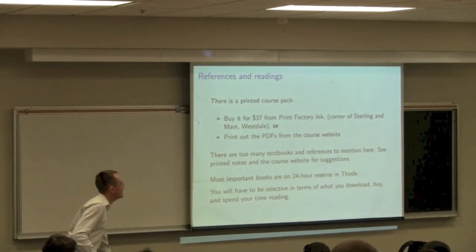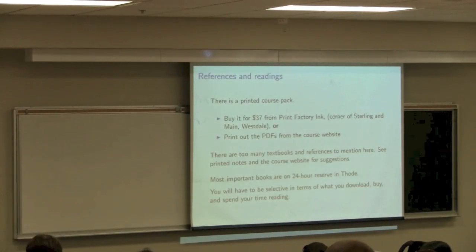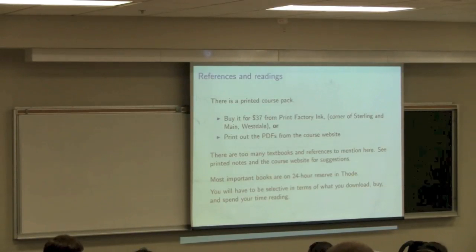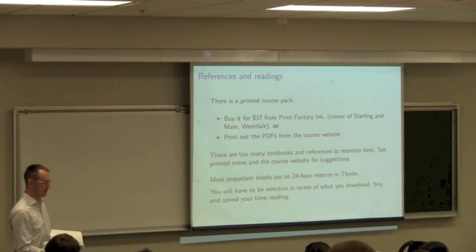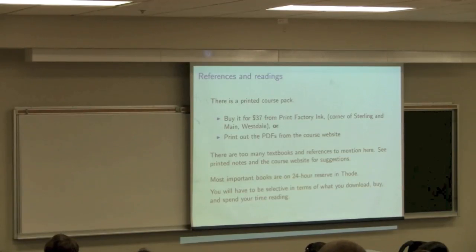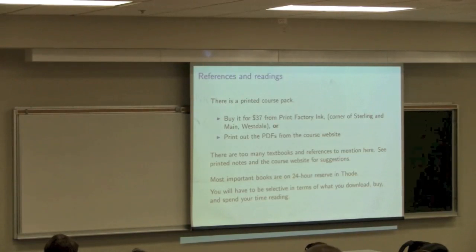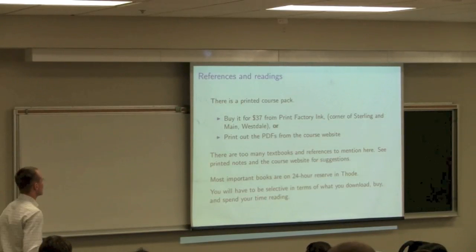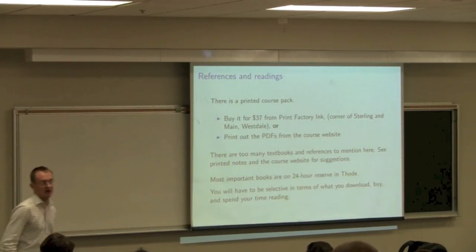There are 90 of you registered and I've asked them to print 45 copies. After that it's print on demand, so the first 45 people who arrive this week can get a copy. It's $37, which is reasonable considering the number of pages — it's double-sided print. It's intentionally left three-ring hole-punched and open because you will be adding to it: extra notes, assignments, and tutorials. They have a quick binding system there if you'd like to bind it.